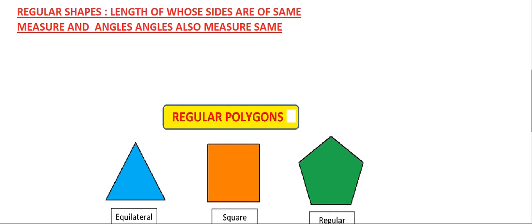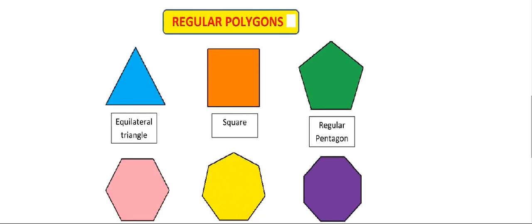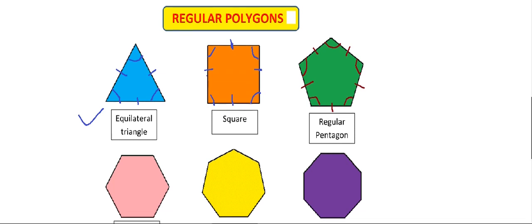Now, what are regular shapes? Regular shapes have sides of the same length and angles of the same measure. An equilateral triangle has all angles acute and all sides the same. A square has all sides the same and all angles equal. A regular pentagon has all angles obtuse and all sides of equal measure.